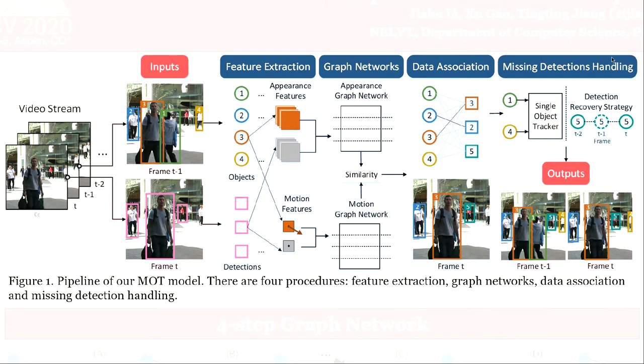The pipeline is shown in Figure 1. There are four procedures. First, we extract the appearance feature and motion feature from objects and detections. Then, the graph networks infer the similarity between each object and each detection.